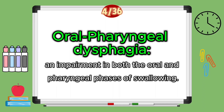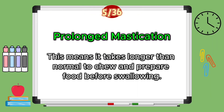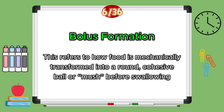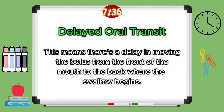Oral pharyngeal dysphagia means there's an impairment in both the oral and the pharyngeal phase of swallowing. Prolonged mastication means it takes longer than normal to chew and prepare your food before you swallow. Bolus formation refers to how food is mechanically transformed into a round cohesive ball or mush before you swallow — similar to IDDSI level 5 minced and moist foods. Delayed oral transit means there's a delay in moving the bolus from the front of the mouth to the back, where swallowing actually begins.